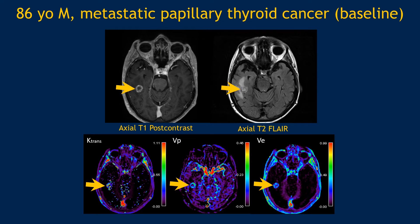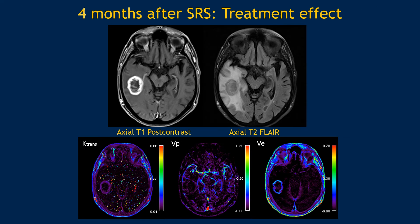This is an example of a patient with a brain lesion that turned out to be papillary thyroid cancer metastasis. The enhancing lesion showing some edema is very high on K-trans, VP, and VE, showing elevated permeability and vascularity. Four months after radiation therapy, post-contrast imaging shows increase in size and significant surrounding edema. However, on perfusion imaging, K-trans appears to have decreased and VP has dramatically decreased overall, suggesting the lesion is much less vascular. This is consistent with radiation effect.